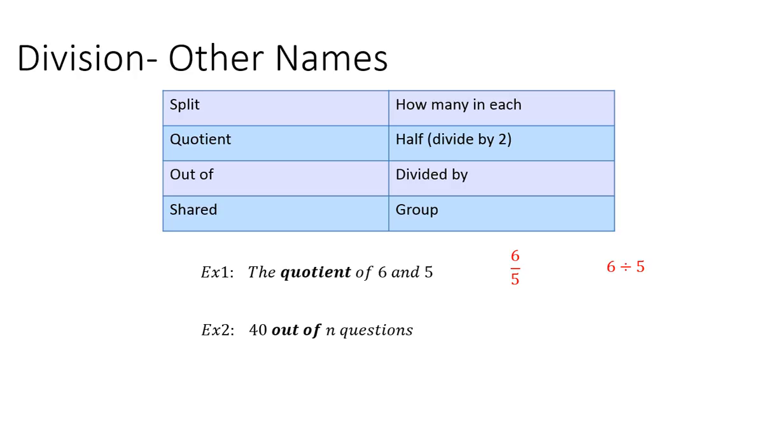Example 2, 40 out of N questions. So it's out of N, so you're going to do 40 divided by N. You can also represent it like that.